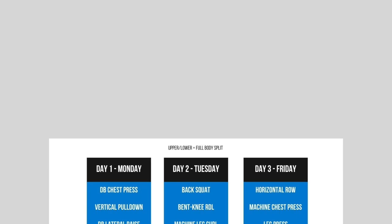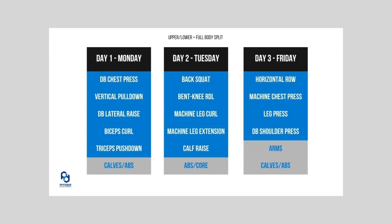Just like we did for the first version, I'm filling in the exercises. For the upper body day: a dumbbell chest press for chest, a pull-down movement for back, a lateral raise for shoulders, a bicep curl for biceps, and a tricep pushdown for triceps — with optional calves and abs. For Tuesday's lower body day: a back squat, a bent-knee RDL, machine leg curl, machine leg extension, and calf raise, with optional abs and core if you have the time. Friday is a full body session: a horizontal row, machine chest press, leg press, and dumbbell shoulder press, with optional arms and calves.